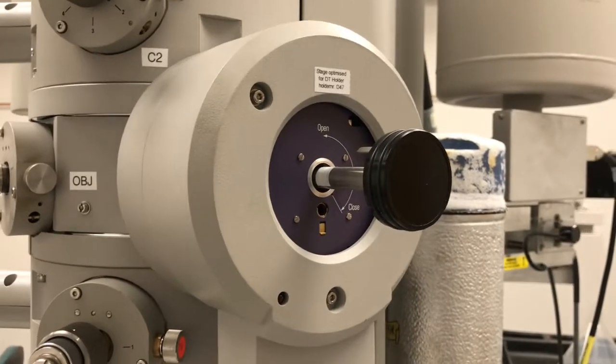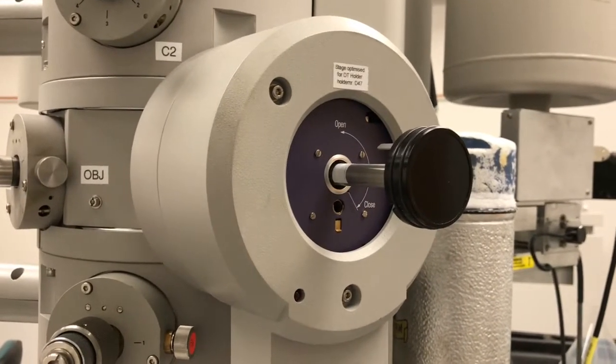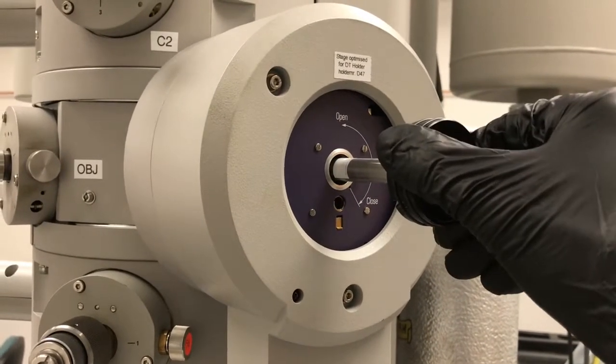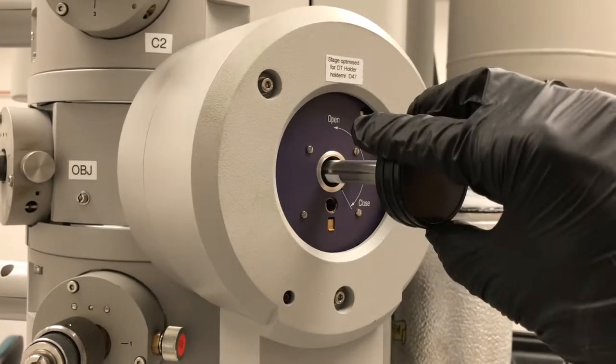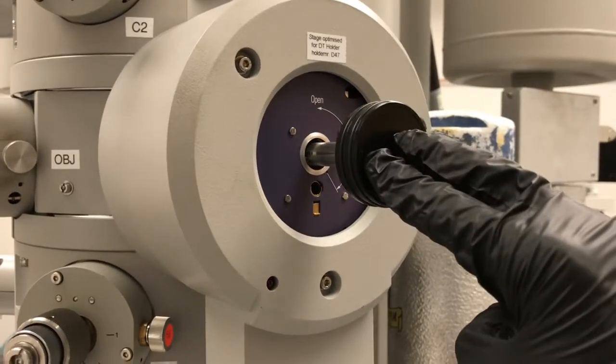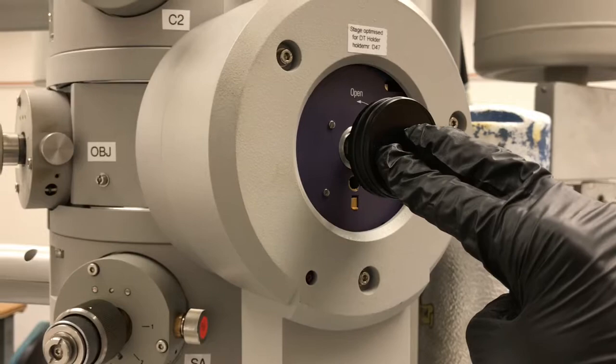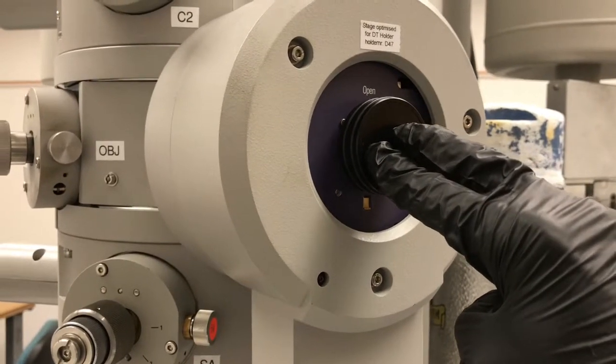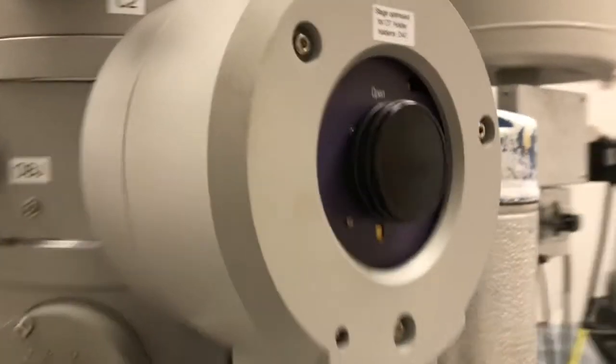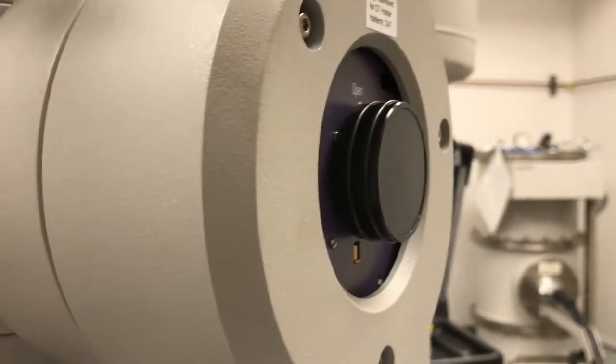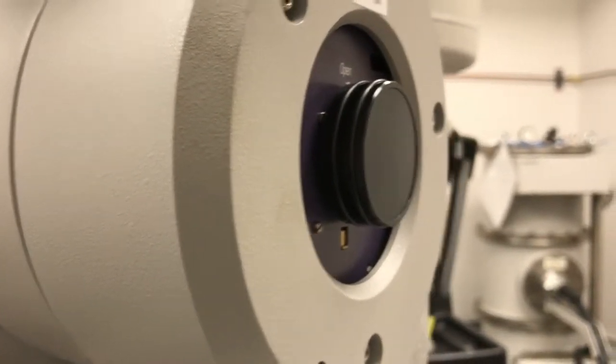Counterclockwise turn, there's the stop. And now if this is in all the way, you should see basically that the holder base is flush against that purple plate.